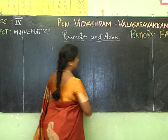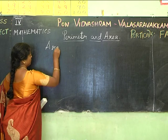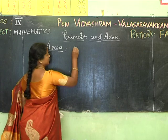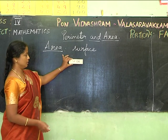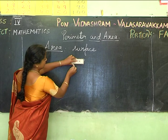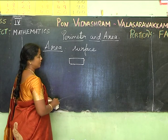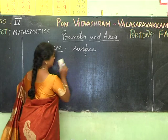Now let's move on to area. Area is the surface covered by a figure. For example, when I keep this duster on the board, it covers some surface — that is called the area of the base of the duster. To measure the area of different shapes, I need grids.